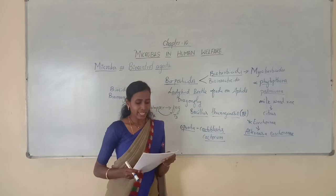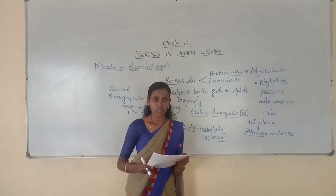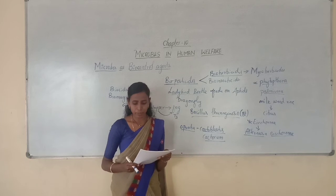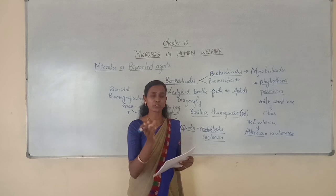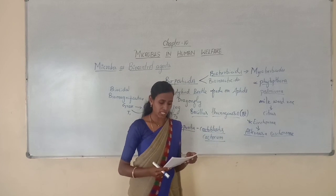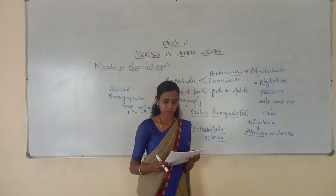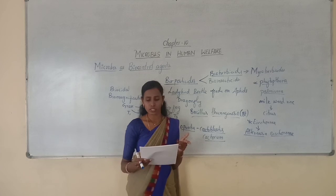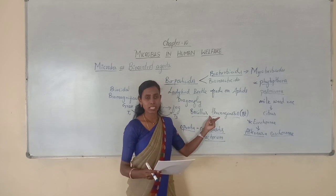Now a few objective questions. First question: When a natural predator is applied on a pathogen organism to control them, this process is called — Option A: Artificial control, Option B: Predation, Option C: Biological control, Option D: Natural selection. The answer is biological control. An organism used to control the growth of another organism — that is biological control. Next question: Which microbe is used for biocontrol of butterfly caterpillars? Option A: Saccharomyces, Option B: Bacillus thuringiensis, Option C: Streptococcus, Option D: Trichoderma. The answer is Bacillus thuringiensis, which is used to control butterfly caterpillars.